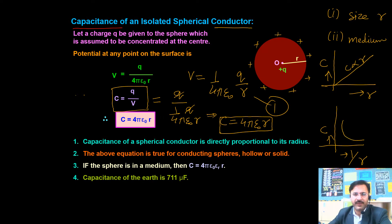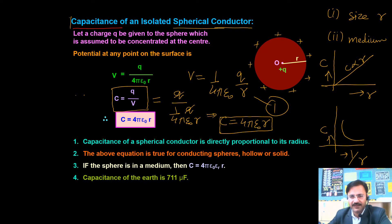Capacitance is the capacity to store charge by a conductor. There are many types of capacitors: spherical, cylindrical, or parallel plate capacitor. For a spherical capacitor, when Q charge is given, it resides on the outer surface, and the potential is V = Q/(4πε₀R). Substituting into C = Q/V gives C = 4πε₀R.